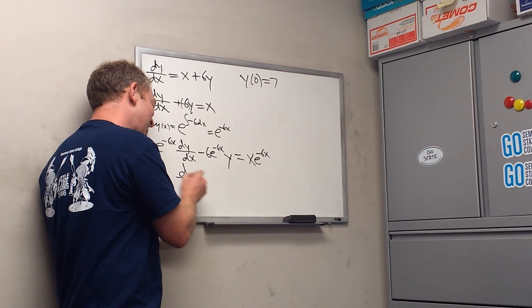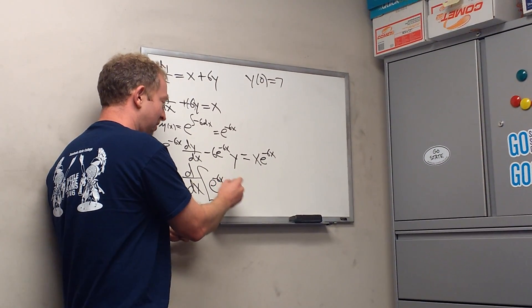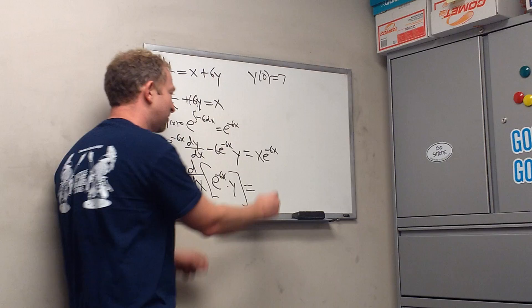So this is the derivative of what? So e to the negative 6x times y. Times y. You got this. Good stuff.